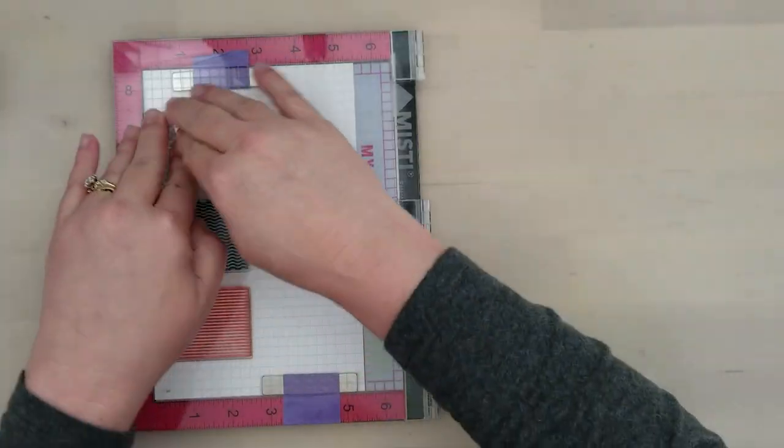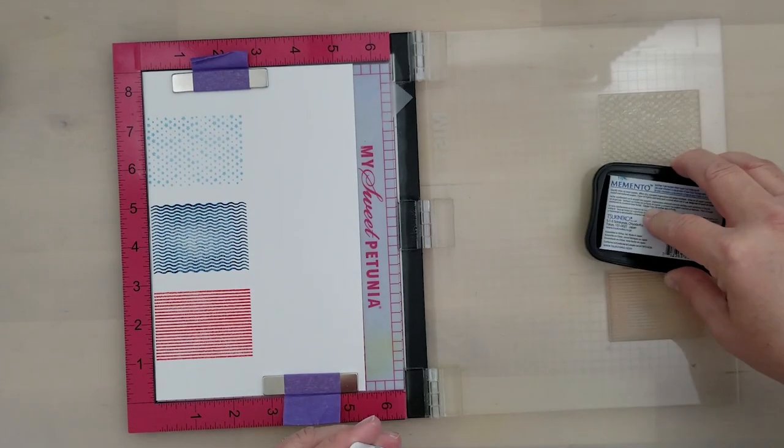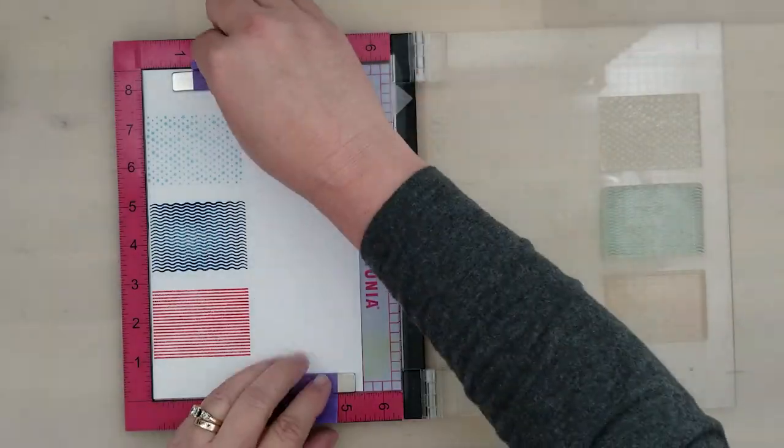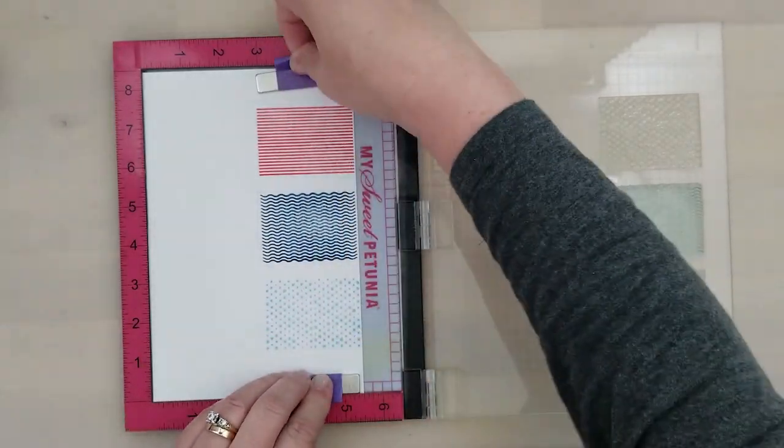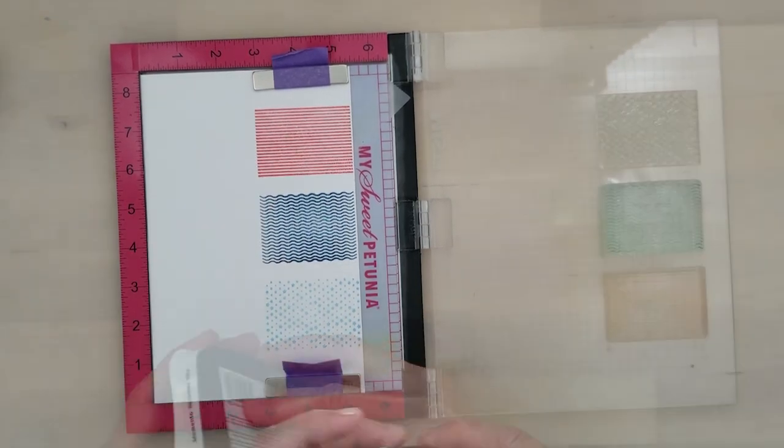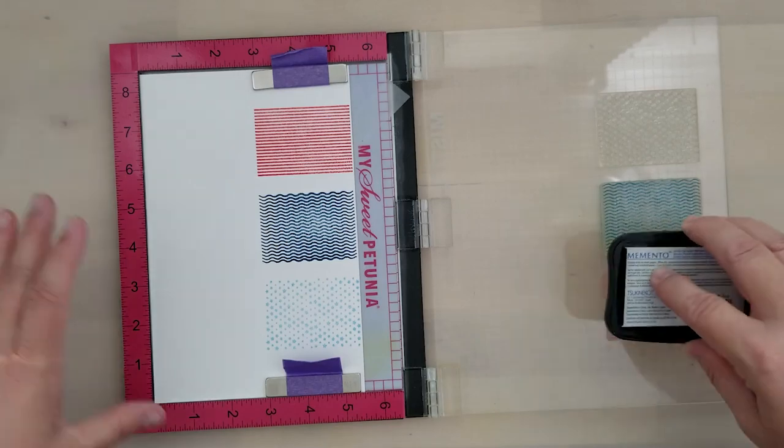I'm going to go ahead and get us started with the projects by stamping three of the patterns from that Micro Pattern set. I'm using straight stripes, the wavy stripes, and a stars pattern. I'll be stamping these with Memento dye inks in the colors Ladybug, Summer Sky, and Nautical Blue. I'm going with a patriotic theme with this.